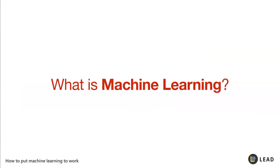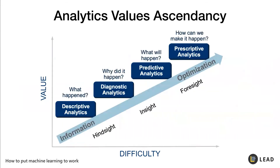So what is machine learning? If you look at the Gartner ascendancy or analytics value ascendancy chart, it's a very famous chart provided by Gartner. What we want to do in terms of using analytics is a journey from information to optimization.